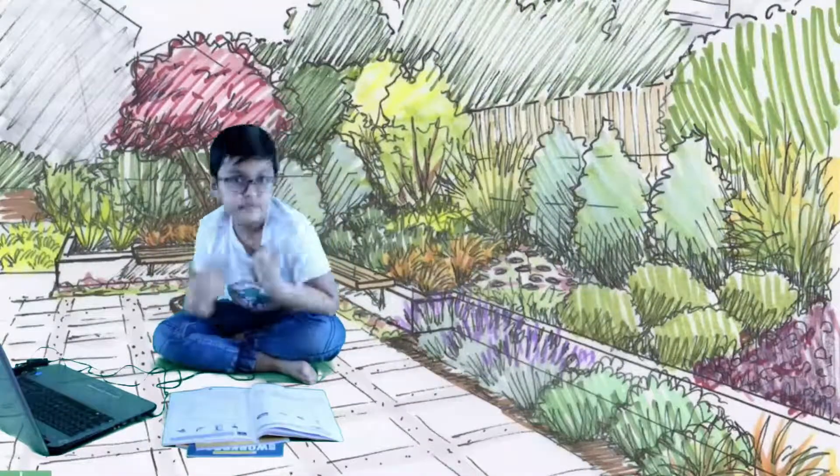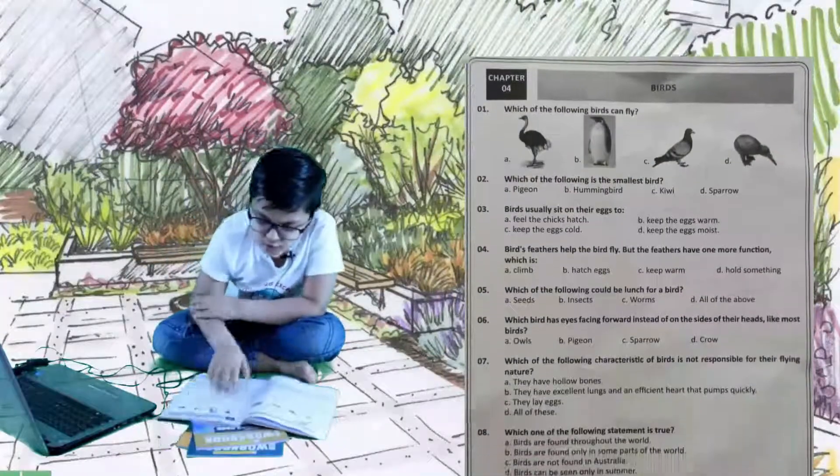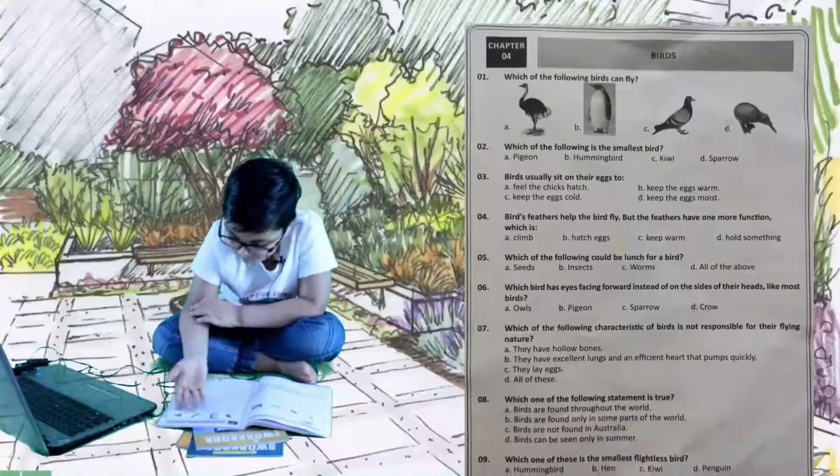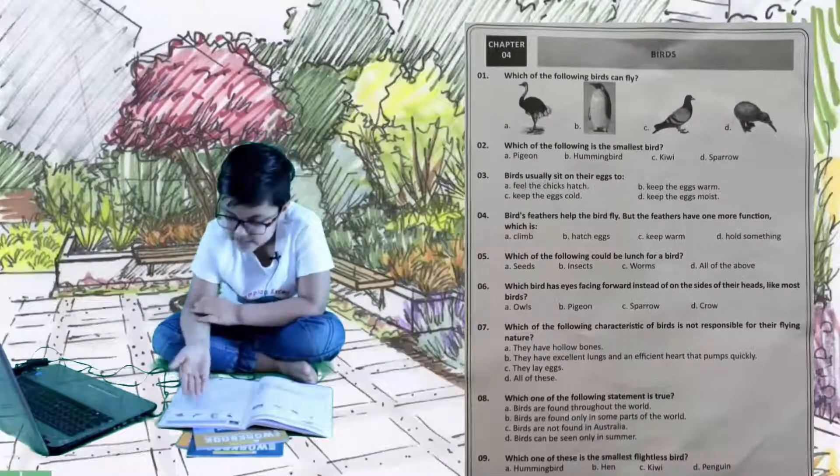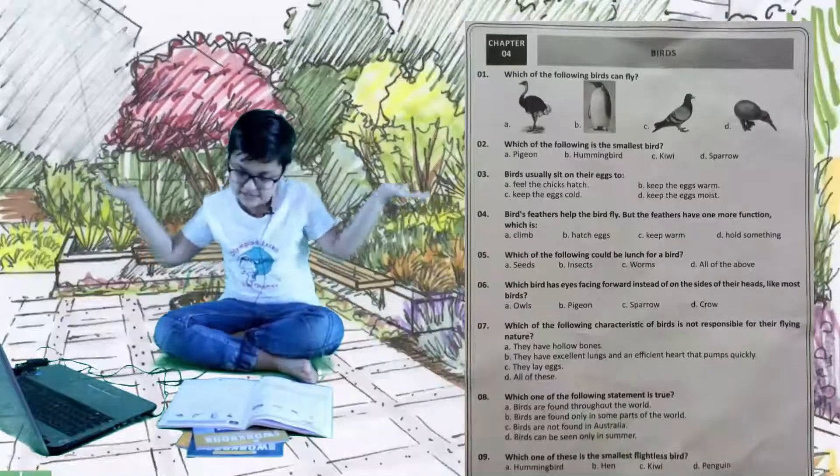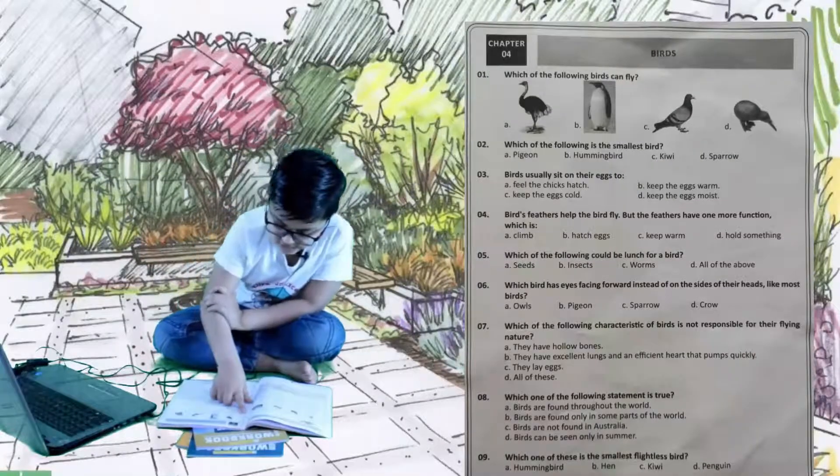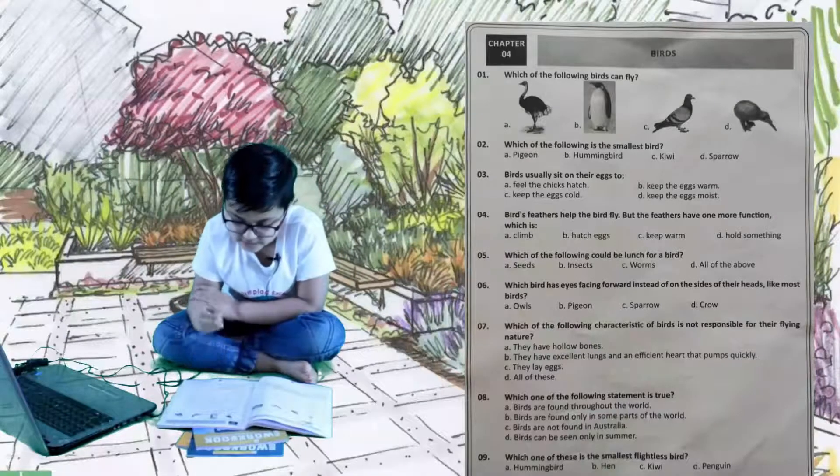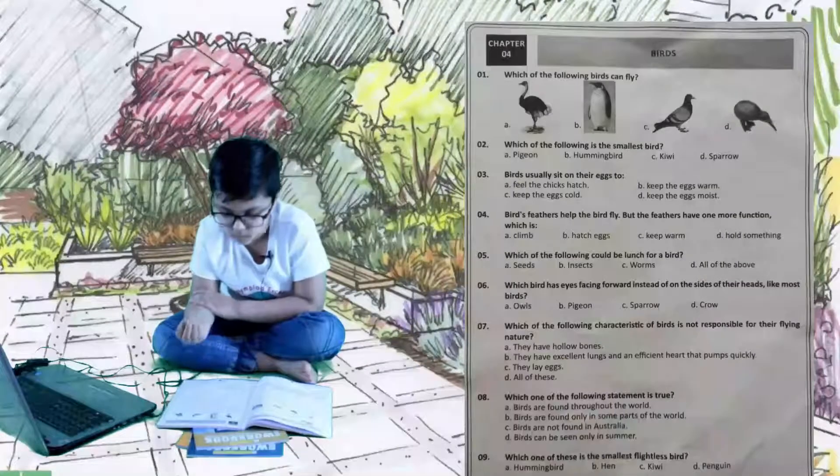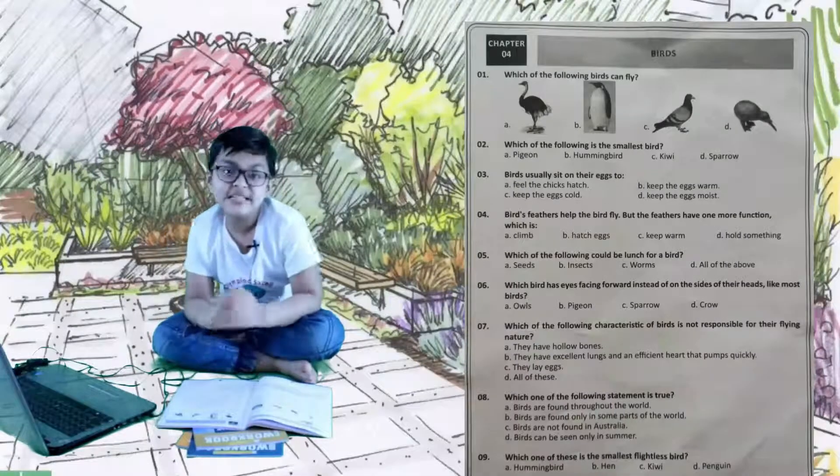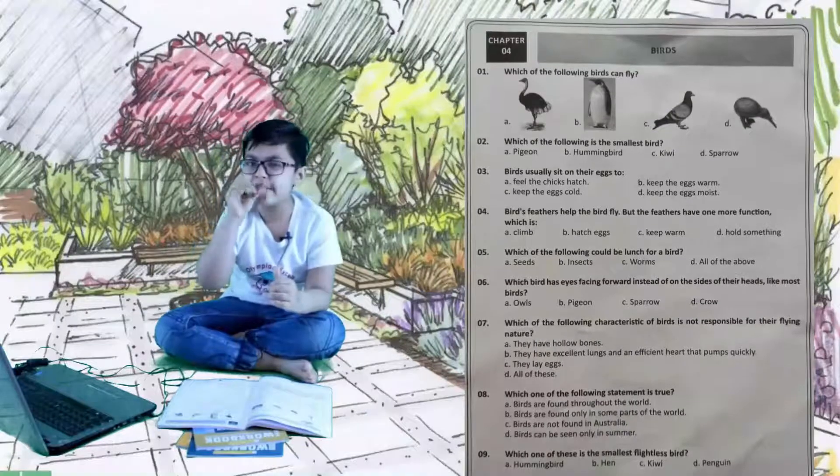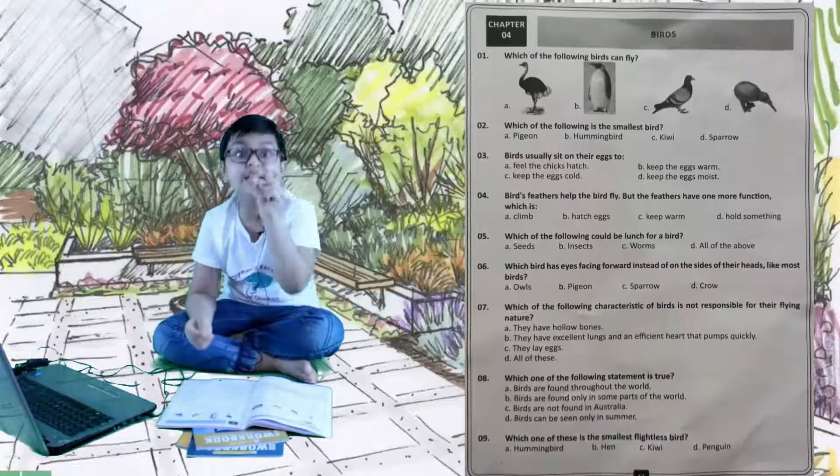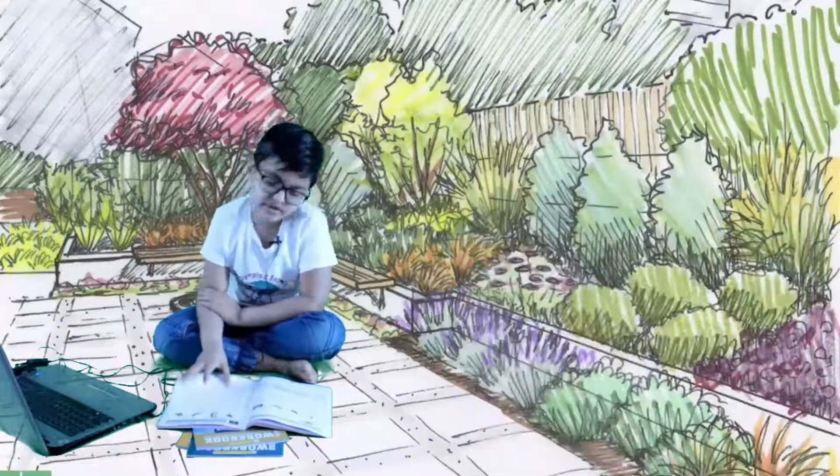Next chapter is chapter 4, that is birds, my favorite birds. First question is: which of the following birds can fly? A is ostrich, B is penguin, C is pigeon, and D is kiwi. It's obvious, the right answer is pigeon. Second question: which of the following is the smallest bird? A is pigeon, B is hummingbird, C is kiwi, and D is sparrow. Hummingbirds can get small, sometimes like honeybees.